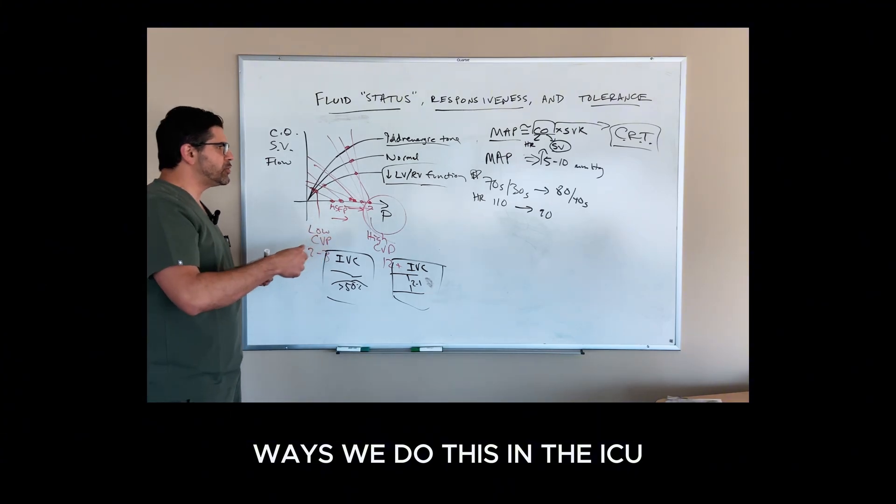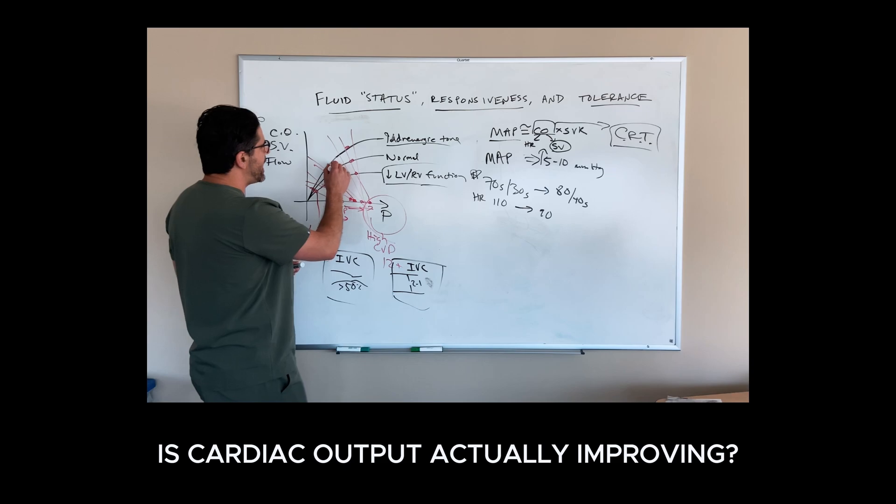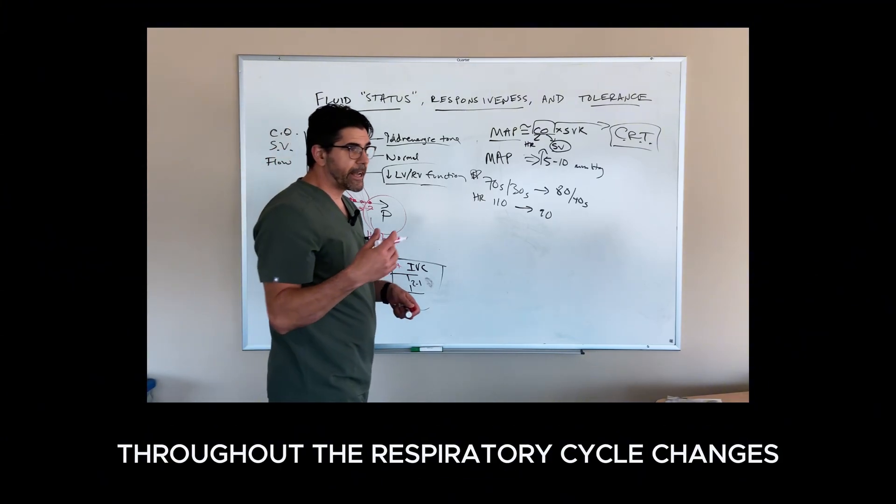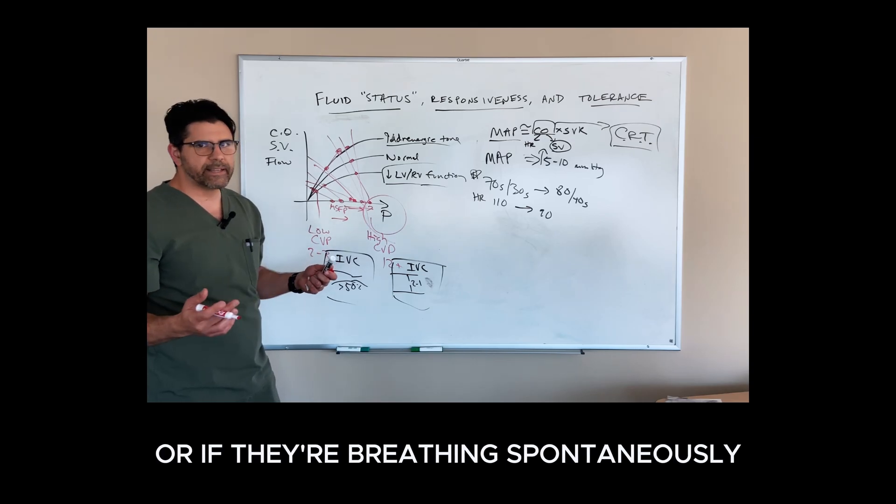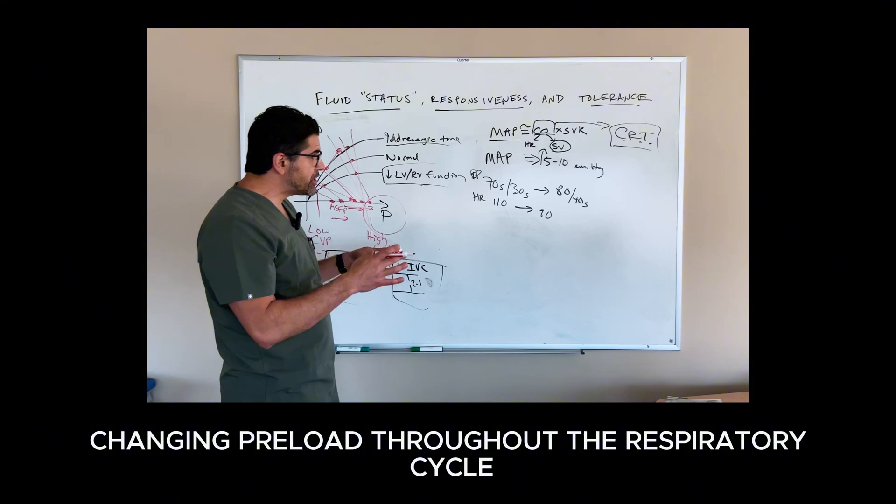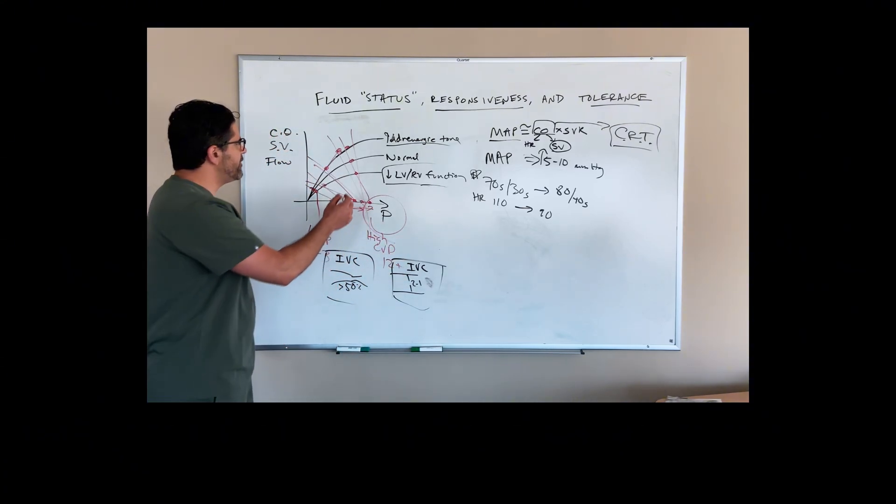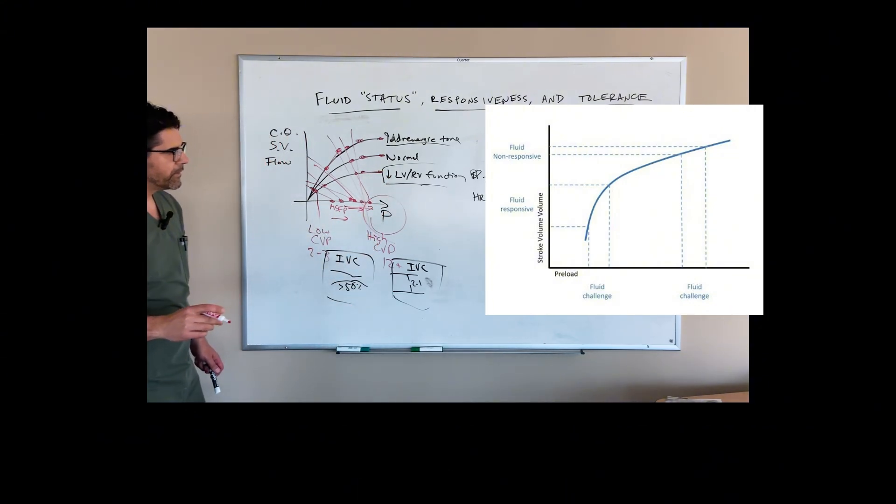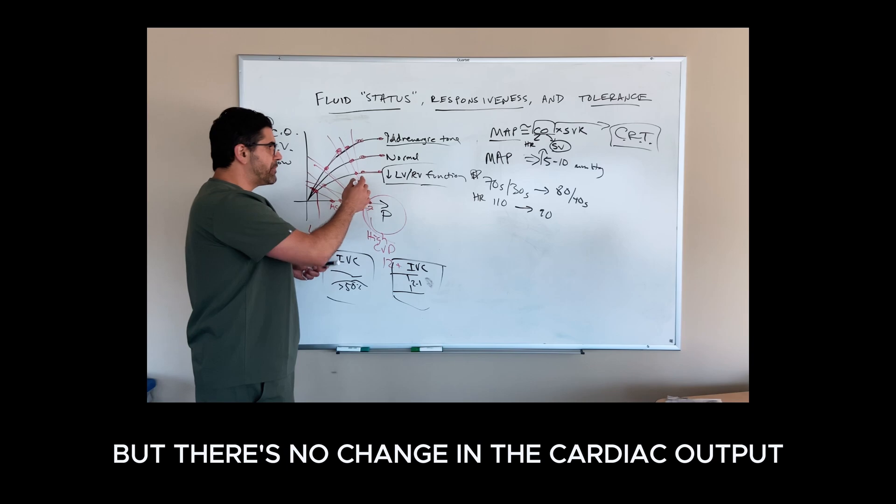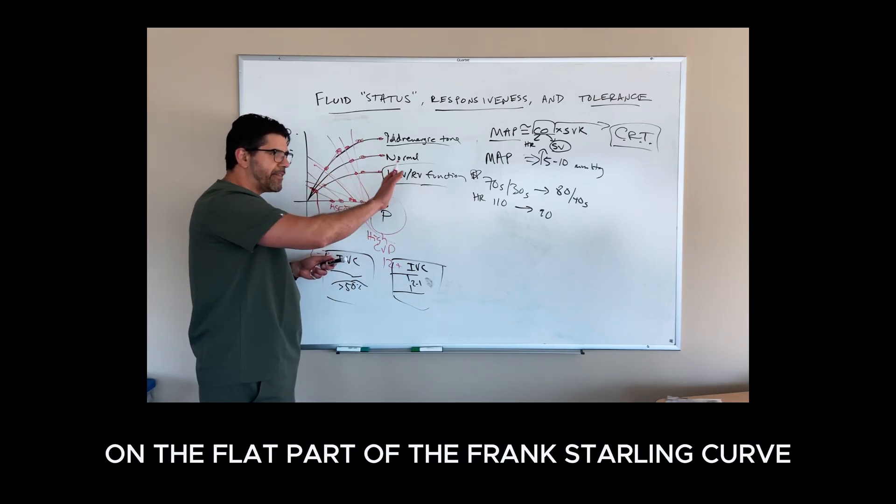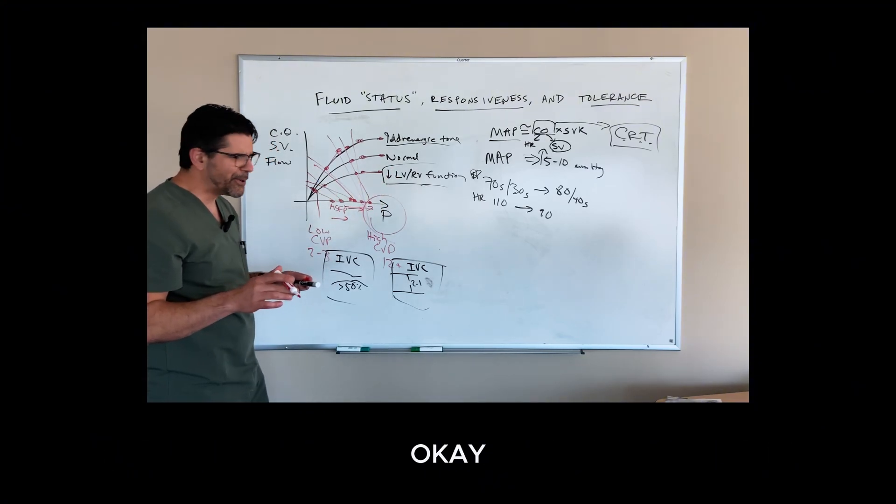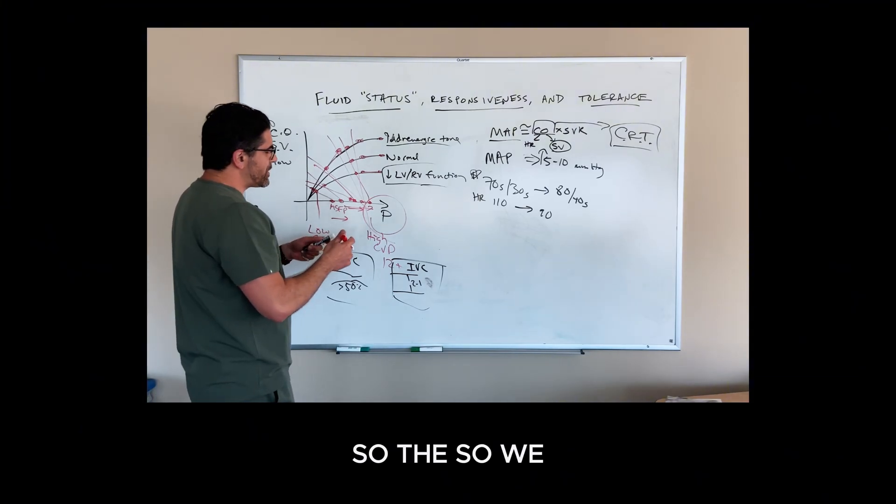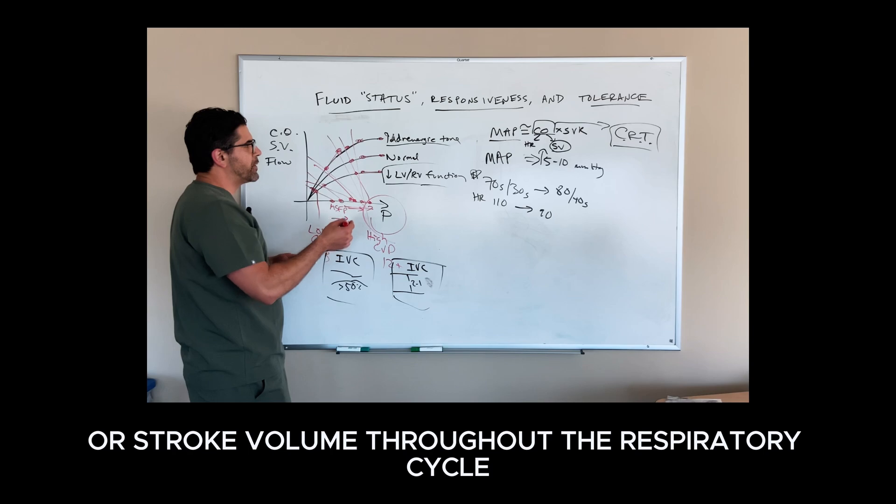The ways we do this in the ICU are a little bit more sophisticated and they are ways of trying to figure out, is cardiac output actually improving? They are all based on the idea that the preload throughout the respiratory cycle changes. This is true for patients on a ventilator or if they're breathing spontaneously. There is a change in intrathoracic pressure that is changing preload throughout the respiratory cycle and we can take advantage of that. If people are on the flat part of the Frank-Starling curve and the preload is changing throughout the respiratory cycle, but there's no change in the cardiac output or stroke volume throughout that respiratory cycle, you can infer that they are on the flat part of the Frank-Starling curve.